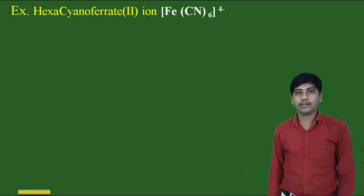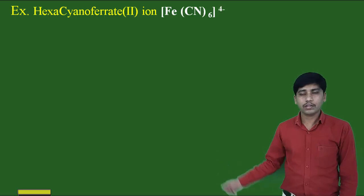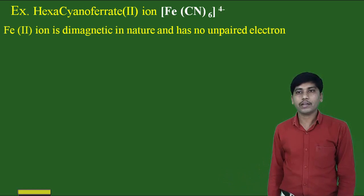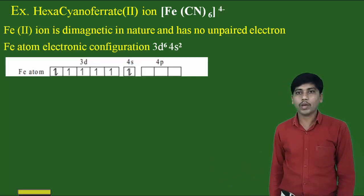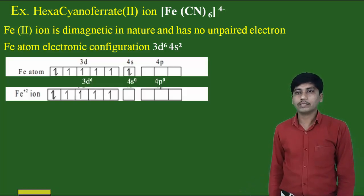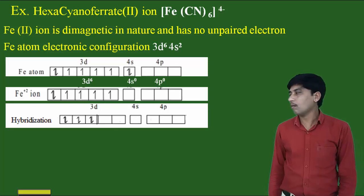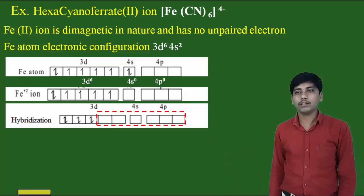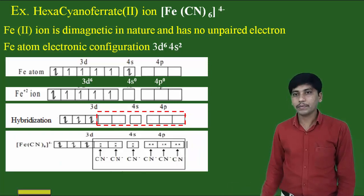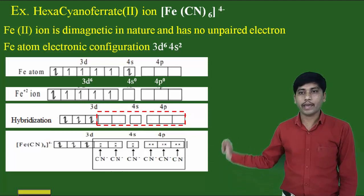The second six-coordinate example is the hexacyanoferrate(II) ion [Fe(CN)6]⁴⁻, where cyanide is the ligand and iron is the central metal atom. This complex is diamagnetic with no unpaired electrons. Iron is again in the +2 oxidation state with configuration 3d⁶ 4s⁰. Since the complex is diamagnetic, all electrons get paired. Two d orbitals, one s orbital, and three p orbitals hybridize to form d2sp3 hybridization, accommodating lone pairs from the cyanide ions.